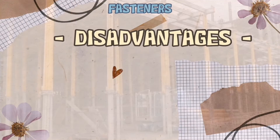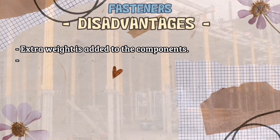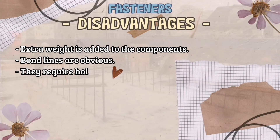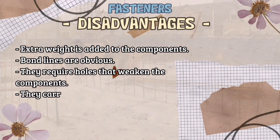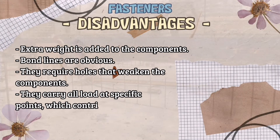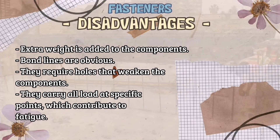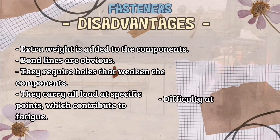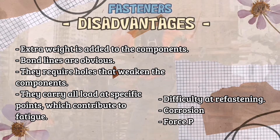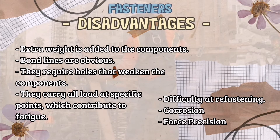Disadvantages of fasteners: extra weight is added to the components; bond lines are obvious; they require holes that weaken the components; they carry all load at specific points, which contributes to fatigue; difficulty to refasten; corrosion; and force precision.